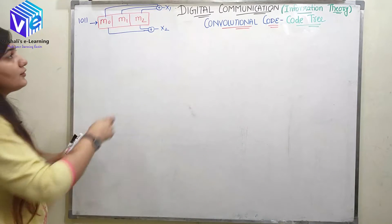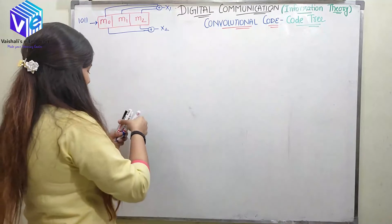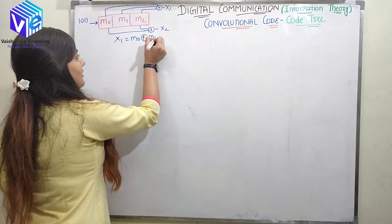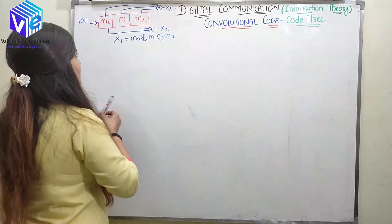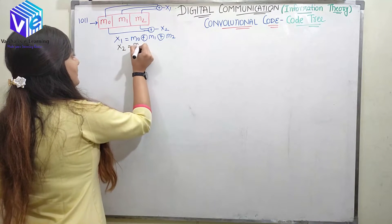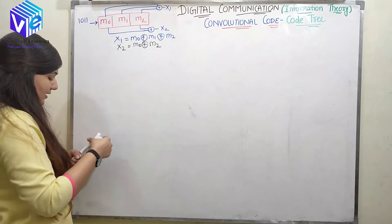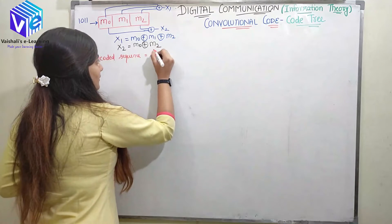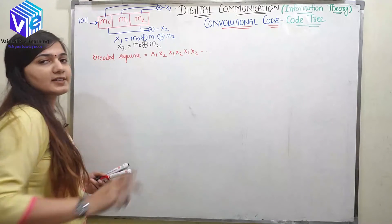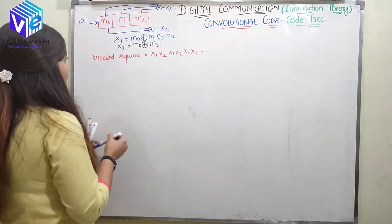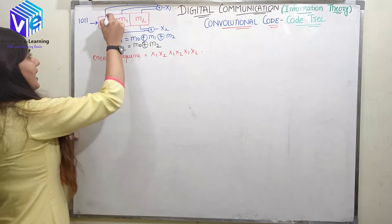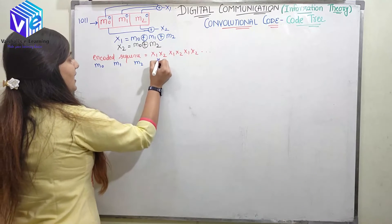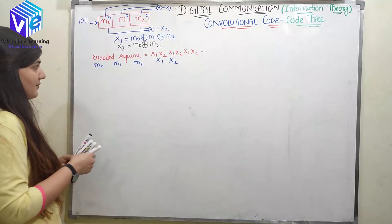I already showed how to generate x1 and x2. x1 is the modulo-2 addition of m0, m1, and m2, whereas x2 is the modulo-2 addition of m0 and m2. The encoded sequence is given in the form x1 x2, x1 x2, x1 x2 after every shifting. For message bit 1011 with initial bits all 0, we found different values of m0, m1, m2 and x1, x2.